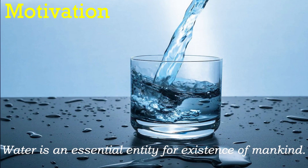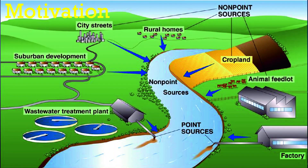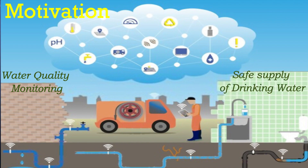Water is an essential entity for the existence of mankind. The contamination of drinking water is increasing due to mixing of industrial wastes and other pollutants into drinking supply sources. The quality of drinking water needs to be monitored to ensure a safe supply of drinking water.